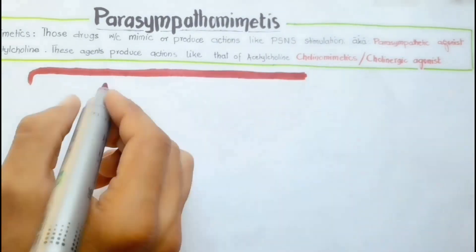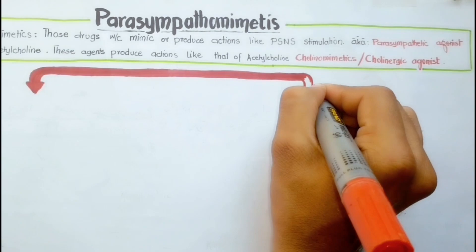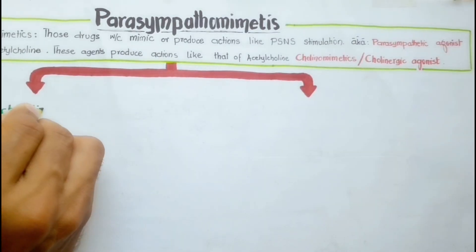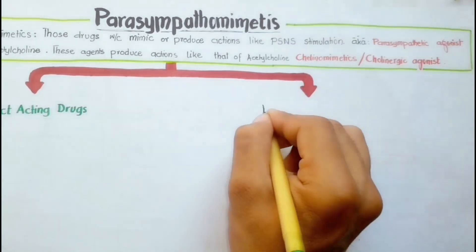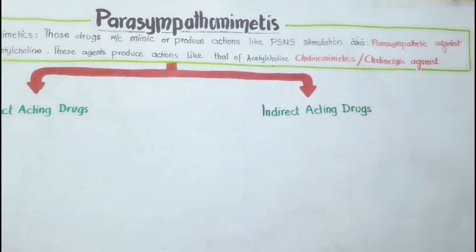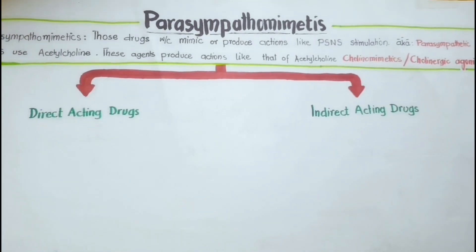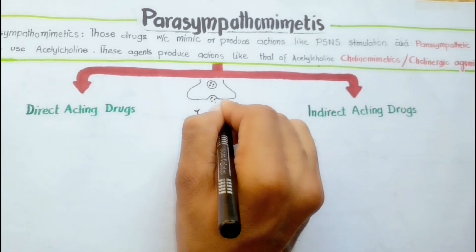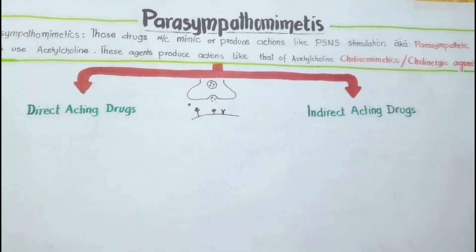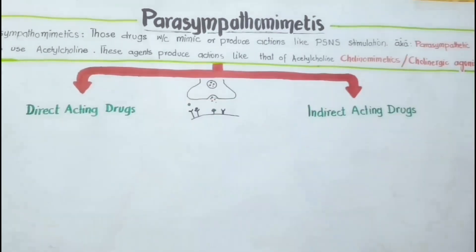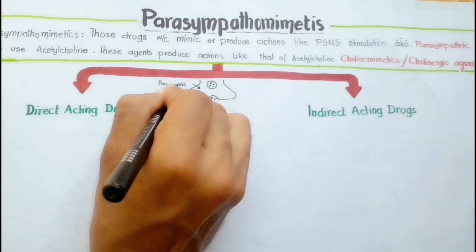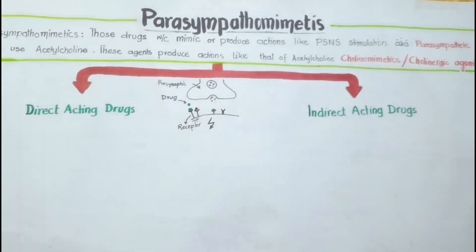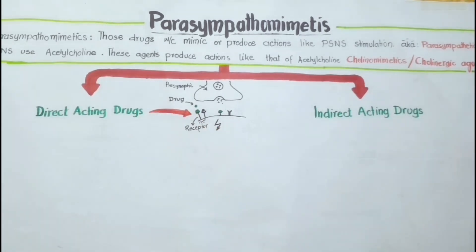Parasympathomimetics are basically divided into direct acting drugs and indirect acting drugs. The direct acting drugs or agonists, as the name indicates, bring about their actions by directly interacting with the cholinergic receptors.